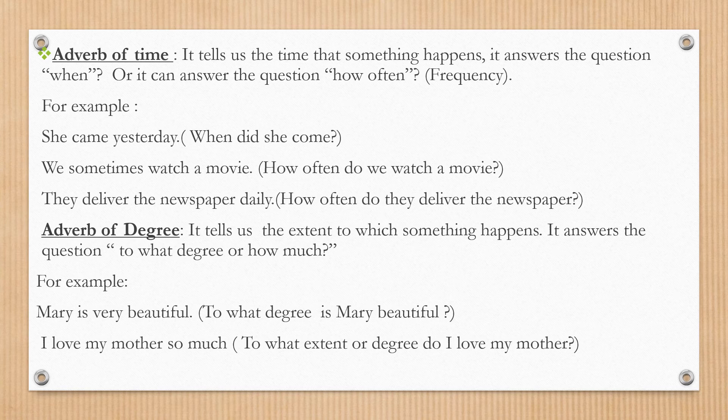We have adverb of degree. Adverb of degree tells us the extent to which something happens. It answers the question to what degree or how much. For example: Mary is very beautiful — to what degree is Mary beautiful? Very. That indicates degree or how much. Another example: I love my mother so much. To what extent or degree? So much.